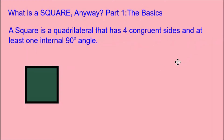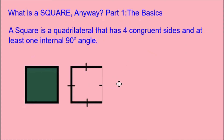A square is a quadrilateral that has four congruent sides and at least one internal 90-degree angle. Four congruent sides means four sides of equal lengths. In this little diagram of a square, we can use these little lines to signify that the four sides have the same measurement, the same length.